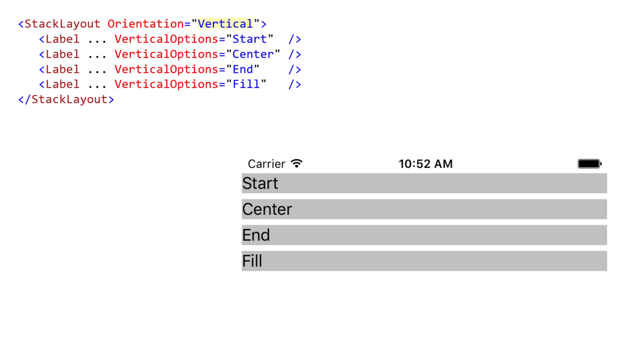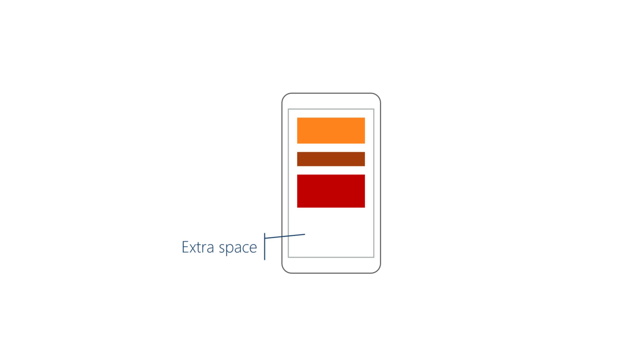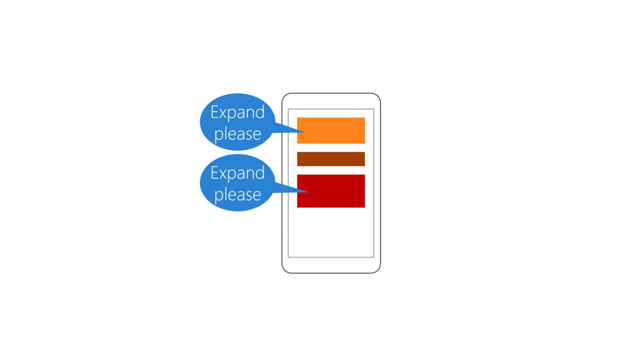Stack Layout does not use plain start, center, end, and fill layout options in the direction of its orientation, since at this point there won't be any extra room in that direction to make those options relevant. A view's expansion setting determines whether it would like the Stack Layout to allocate extra available space to its rectangle. Suppose you have a vertical Stack Layout. During the layout process, the Stack Layout will calculate the height of all its children. Sometimes the children will not fill up all the available space. Stack Layout offers a feature called expansion that lets children request a share of this extra space. Each child can ask for expansion — that is, expansion is a property setting on the child views processed by the Stack Layout.